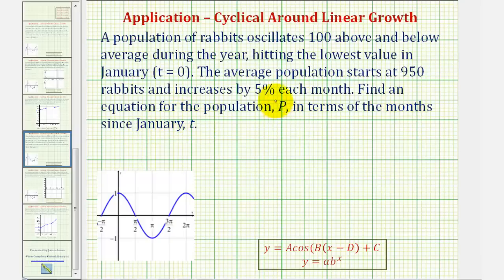So our equation p, or p of t, will actually consist of two functions. We'll have an oscillating function, which will be a sinusoidal or trig function, and then we'll have an exponential function that models the non-oscillating growth. So let's say that p of t will equal f of t plus g of t, where f of t will be the oscillating part and g of t will be the exponential growth part.